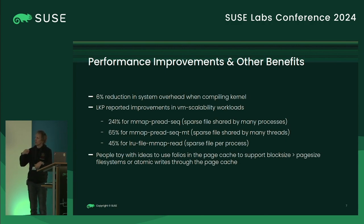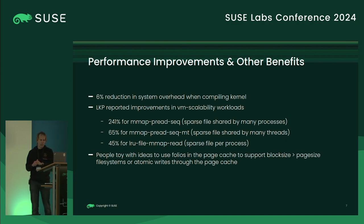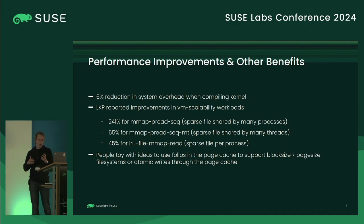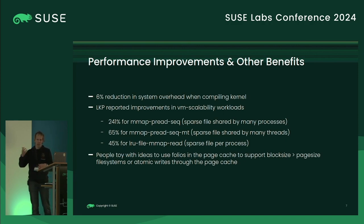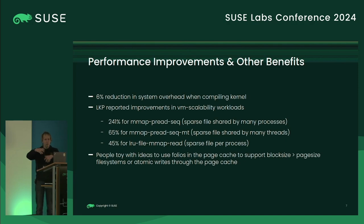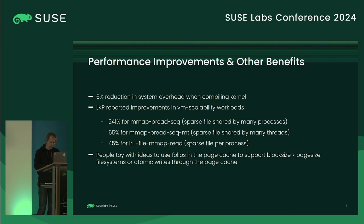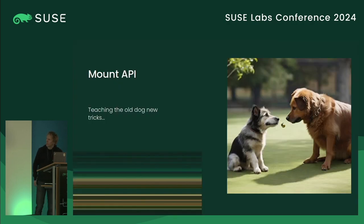People are also experimenting with using folios to constrain the minimum folio size for a file, enabling support for file systems with block sizes larger than the page size. Currently on x86, file system block size is limited to four kilobytes because that's the page size. With folios, you could in theory support file systems with larger block sizes.